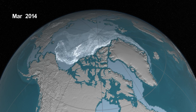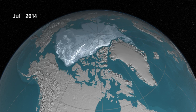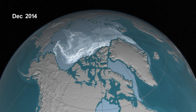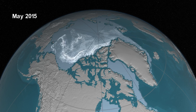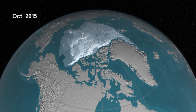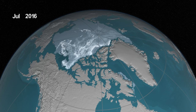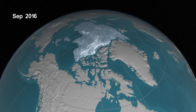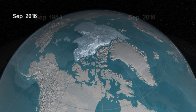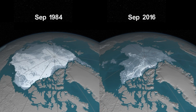As we get towards the more recent years, much of that oldest ice — the ice that's older than five years old, shown in bright white — has almost virtually disappeared from the Arctic Ocean. The Arctic is now dominated by younger and thinner ice.